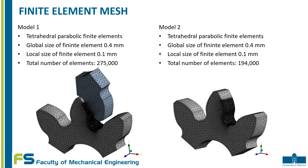The element mesh for both models used tetrahedral parabolic finite elements with a global size of 0.4 mm. Since important stress-strain values are expected in the fillet zone of the tooth root, local refinement with a size of 0.1 mm was used as shown in the figures. The total number of elements in model 1 is 275,000 and in model 2 is 194,000 elements.